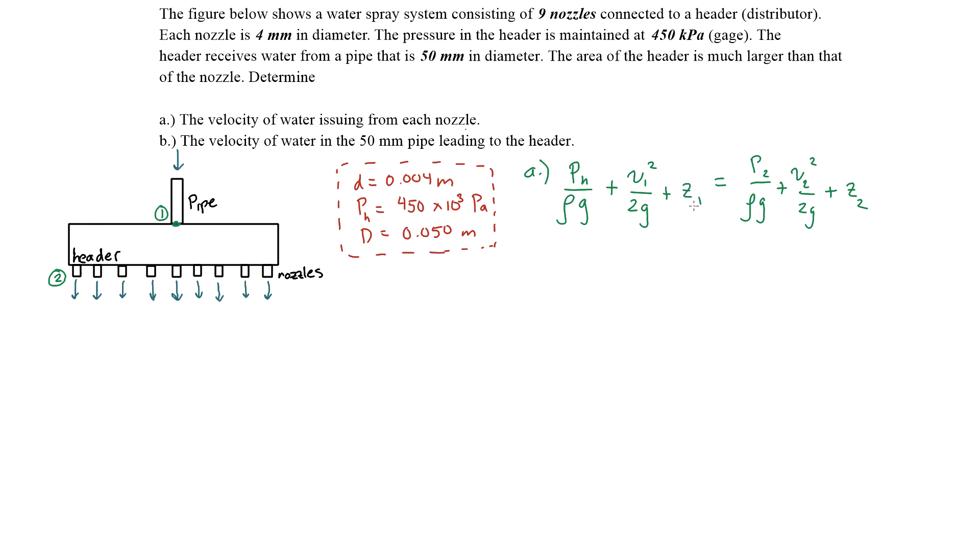We can ignore the height of the system because we can say that the height is pretty negligible from the header to the nozzles. So the distance from Z1 to Z2 is practically zero. This is going to be zero and this is going to be zero. Now we make that assumption dealing with the area of the header being much larger than the nozzle.